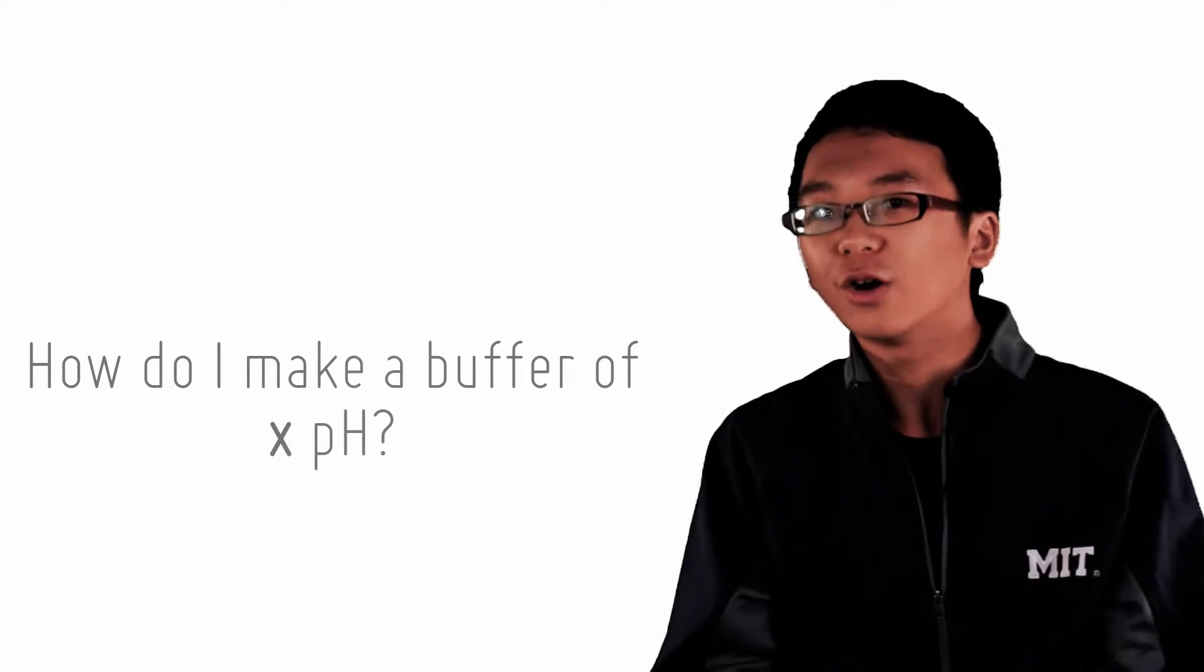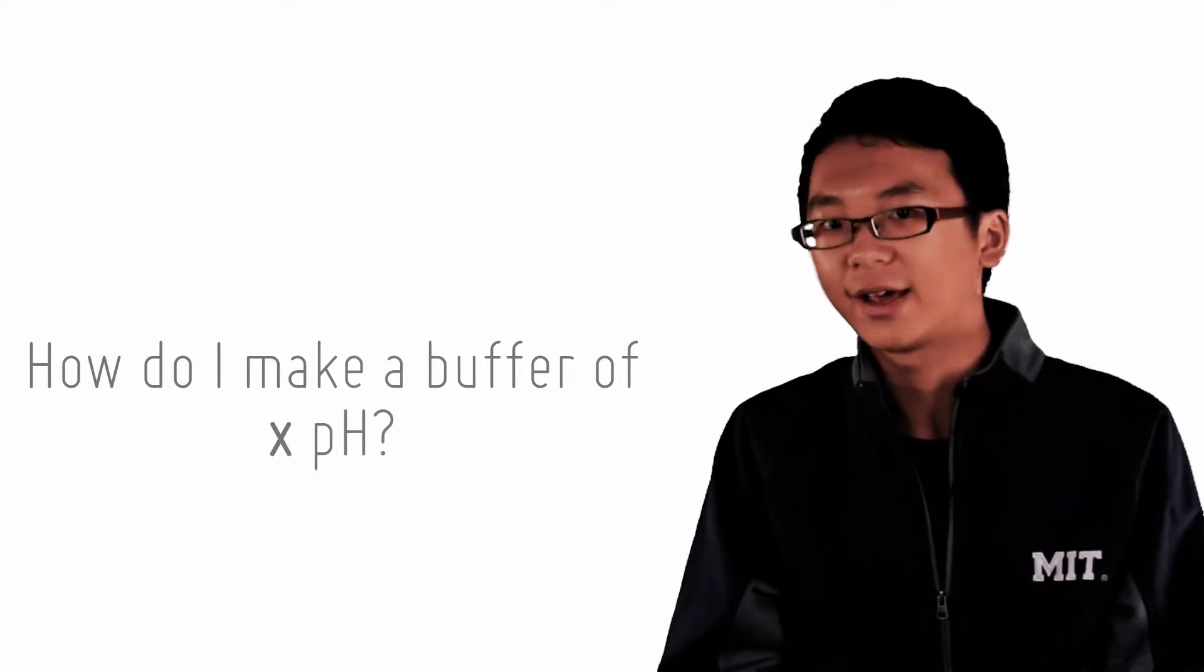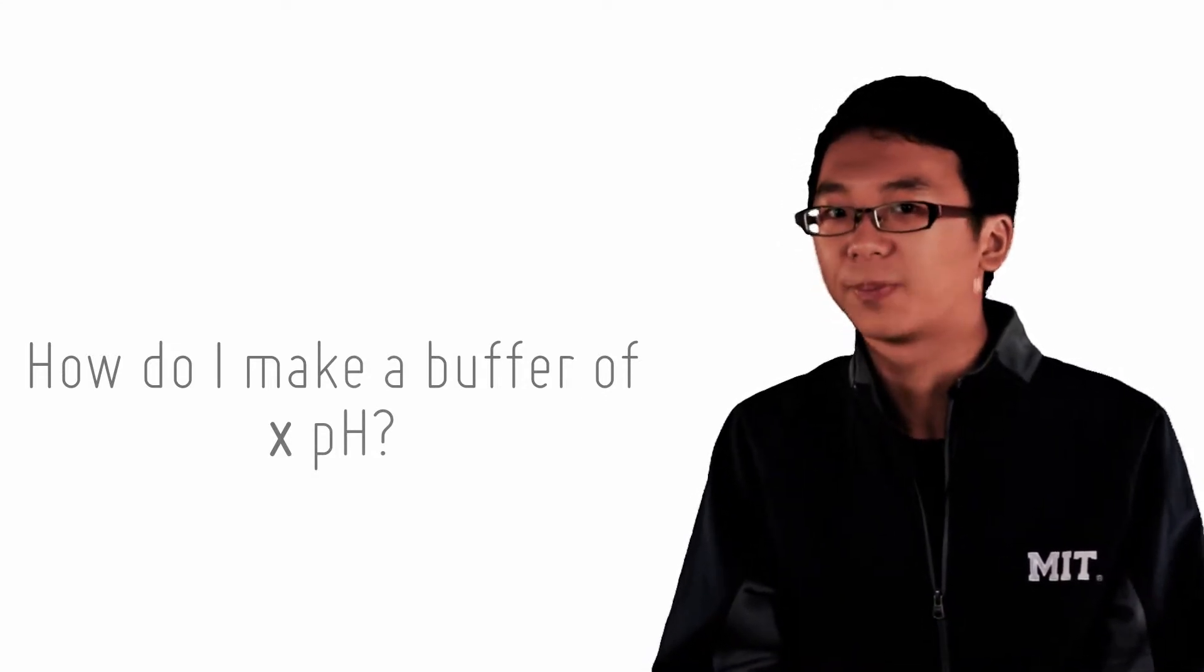So now we know how to make a buffer solution. But how do we get it to a certain pH? How do I know what amount of acid and conjugate base I need to add to create a buffer of a certain pH? Here is where equilibrium concepts become useful.